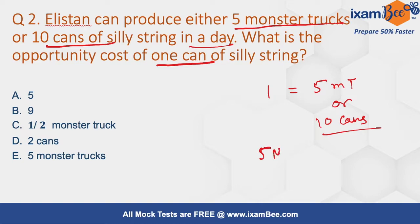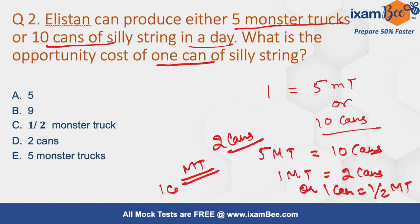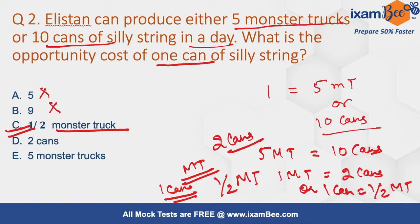Five monster trucks equals 10 cans because both are produced in one day. If we look at one monster truck, it equals two cans. So one can equals half a monster truck. If Elastin chooses to produce one monster truck, he has to sacrifice two cans. When he chooses to produce one can, he has to sacrifice half a monster truck. So the right answer is option C — half a monster truck.